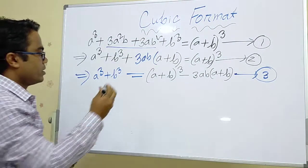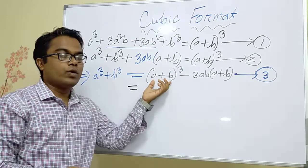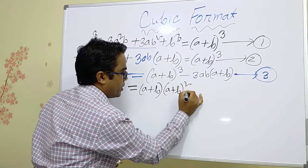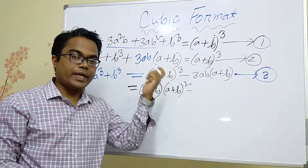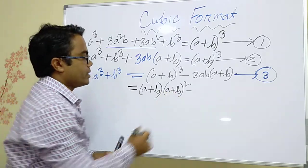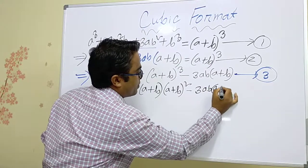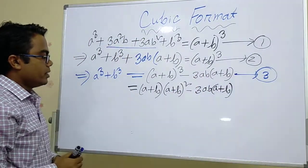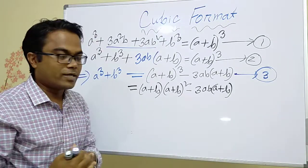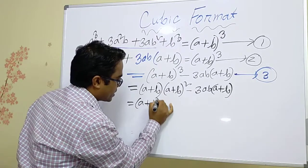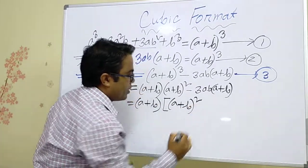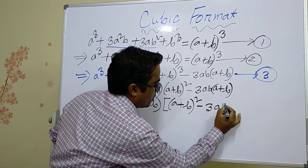Let's see the next slide. (a + b) whole cube can be written as (a + b) multiplied by (a + b) whole square — meaning (a + b) multiplied by itself 3 times. Here one time and here two times, and this 3ab multiplied by (a + b) remains fixed. It is seen that (a + b) exists in both terms. So if we take (a + b) as a common factor, the remaining terms will be (a + b) whole square minus 3ab. Close the bracket.